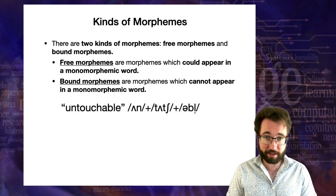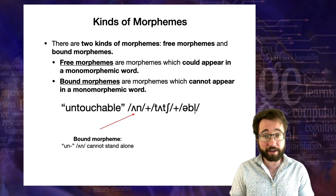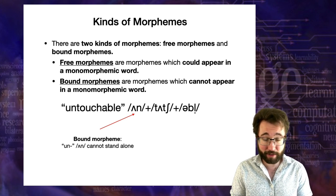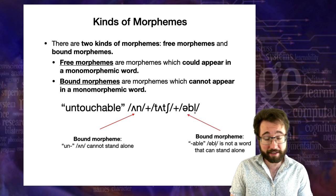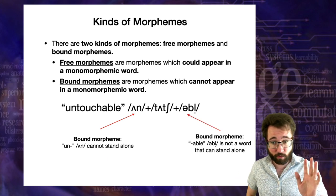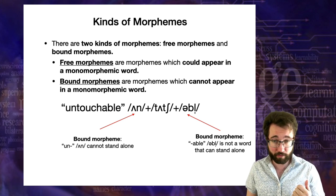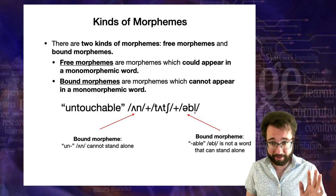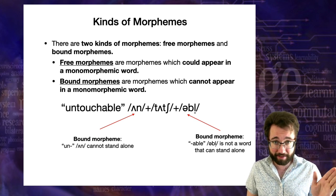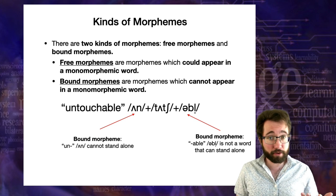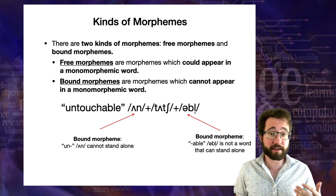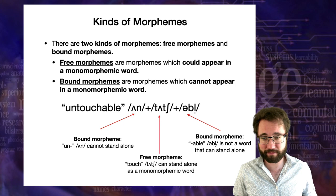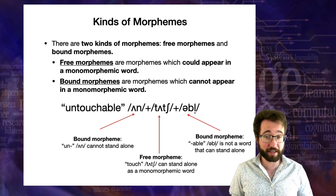In 'untouchable,' 'un' is a bound morpheme — you can't say 'un' on its own. The suffix 'able,' spelled a-b-l-e, is also a bound morpheme. You might think 'able' is a separate word in English, but be careful not to be misled by the spelling. In terms of phonemes, this suffix is /əbl/, not /eɪbəl/. You can't say /əbl/ on its own — it's bound. And 'touch' in the middle is a free morpheme — it can show up on its own as a word.